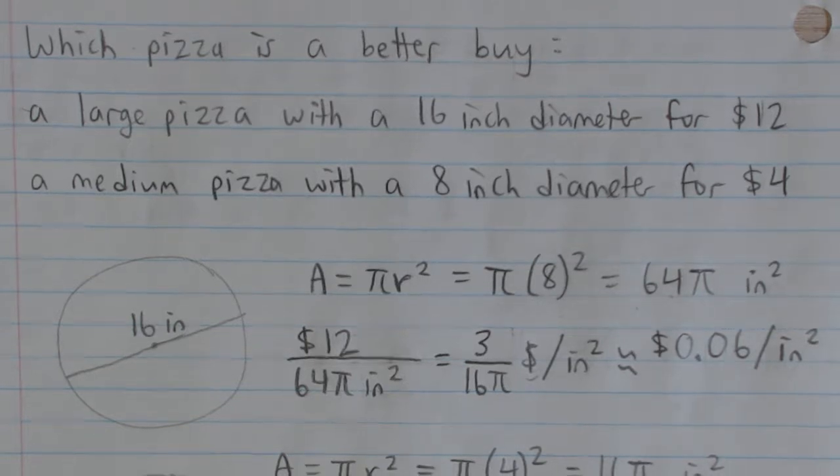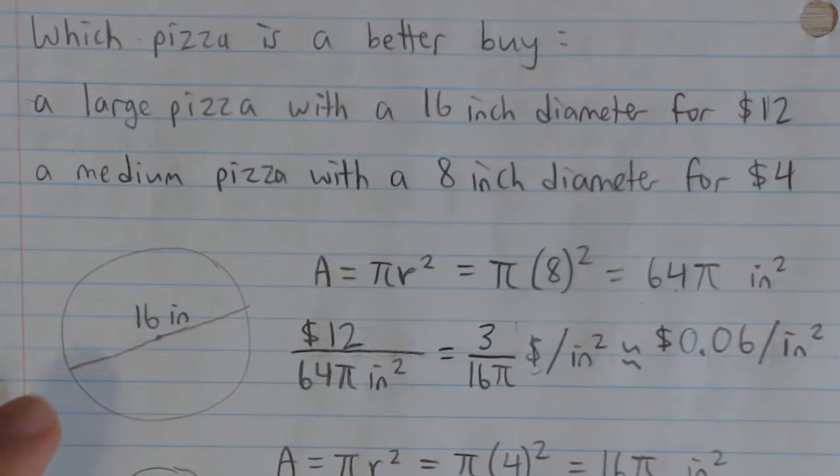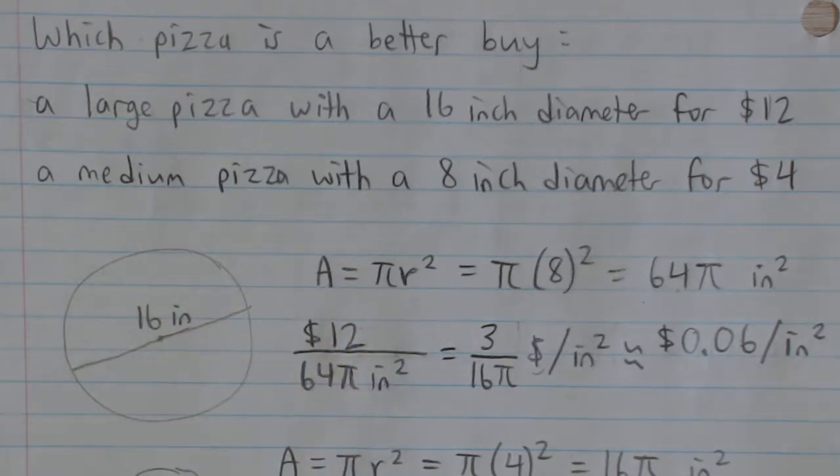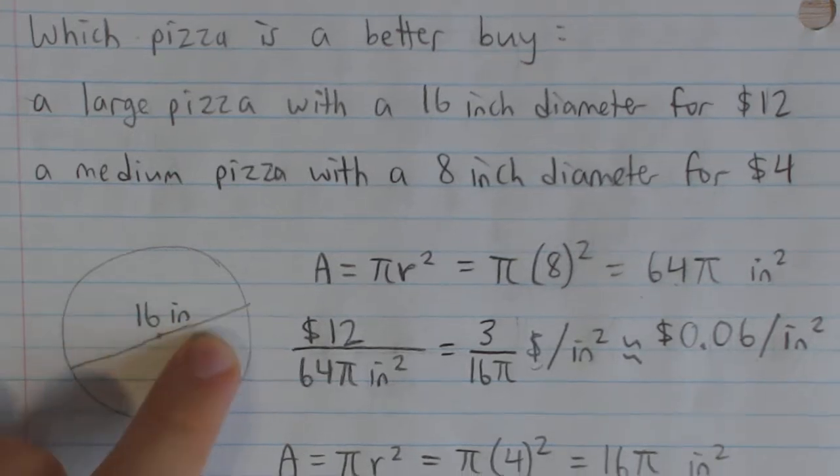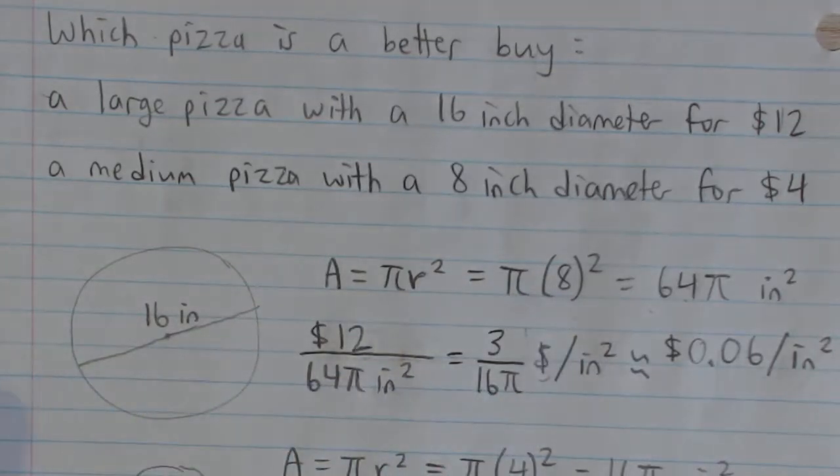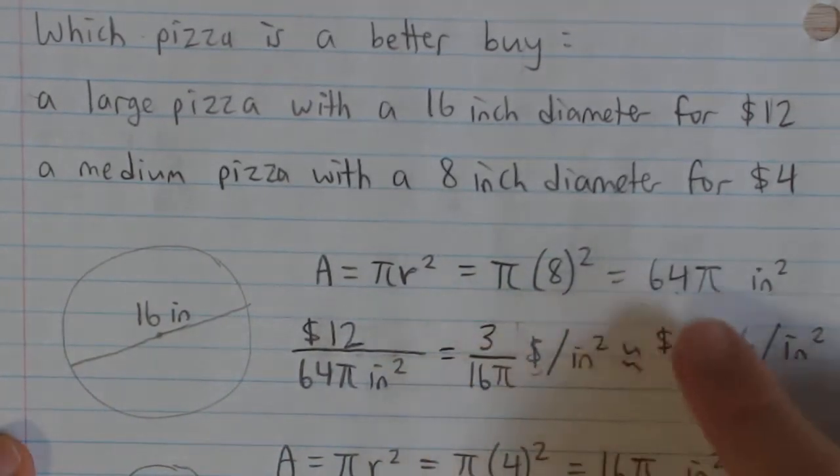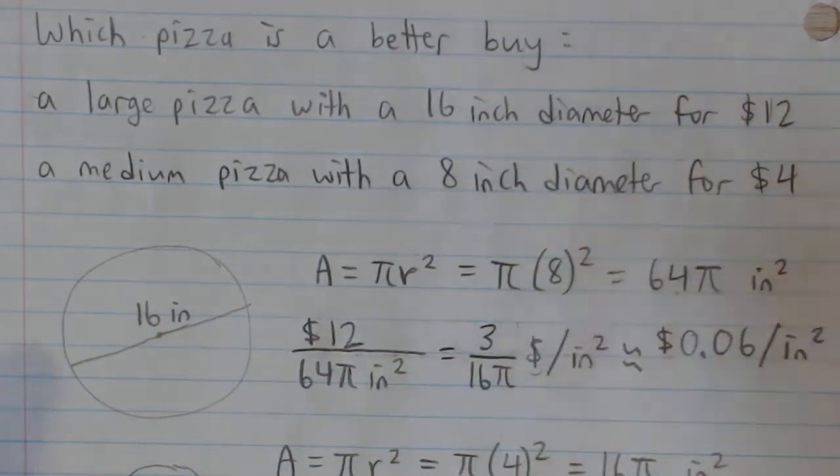For the large pizza, let's calculate the area. We're given its diameter - 16 inches. We know the area of a circle is π times r squared, the radius squared. But we're given the diameter, and we know the radius is half of the diameter, so it's 8 inches. We plug that into our formula and we get 64π inches squared - that's the area of the large pizza.